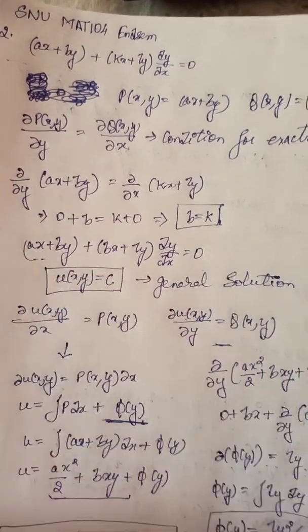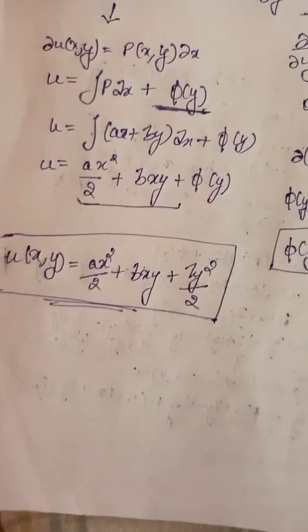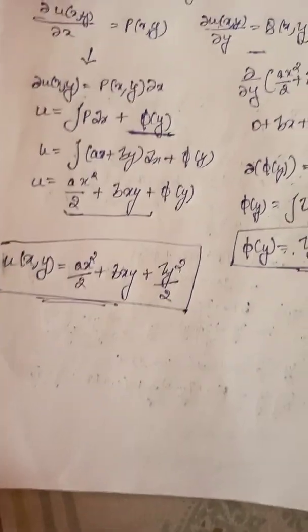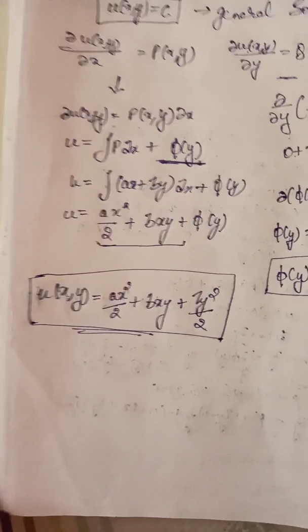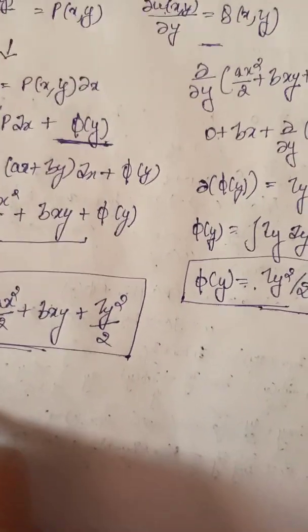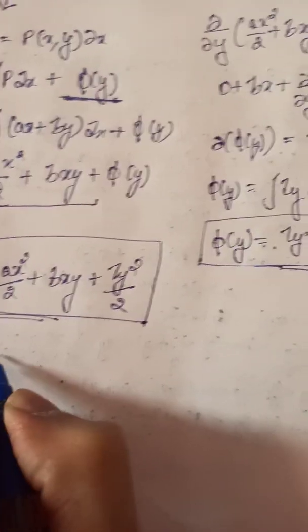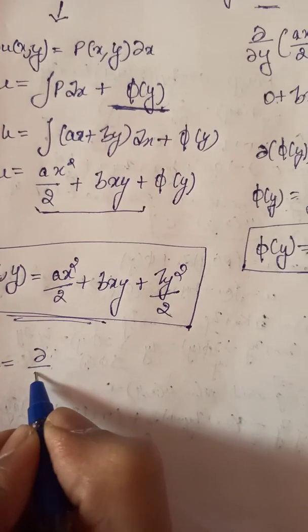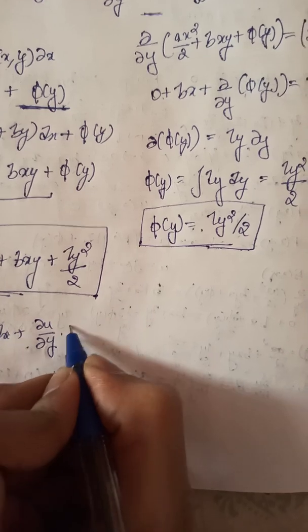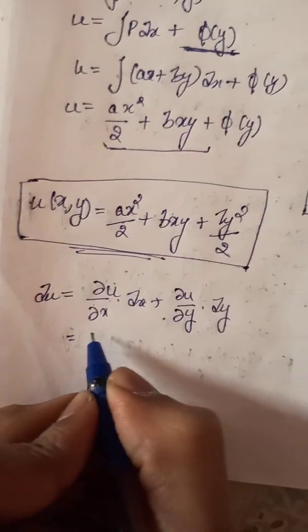Now we have to verify whether this is really the general solution of the exact ODE. To do that, we partially differentiate u(x,y) with respect to x and y, giving du equals partial u by partial x dx plus partial u by partial y dy.